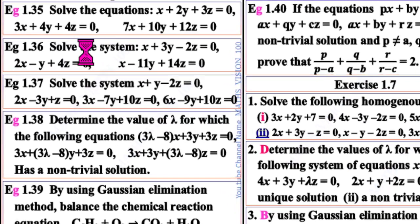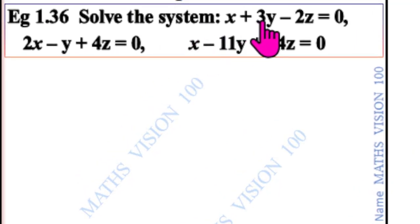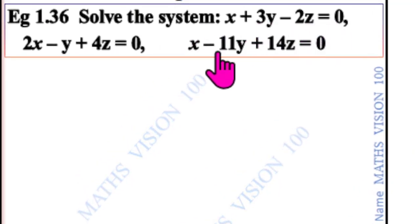Example 136: solve the system x plus 3y minus 2z equals 0, 2x minus y plus 4z equals 0, x minus 11y plus 14z equals 0.